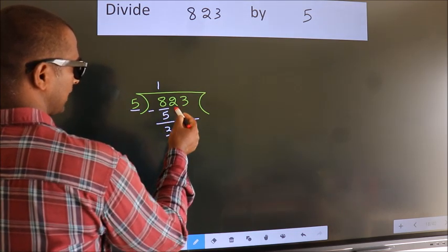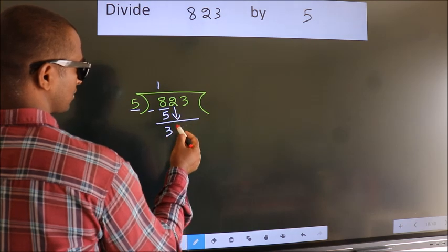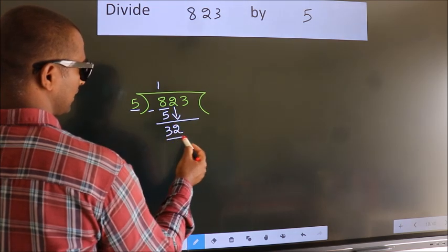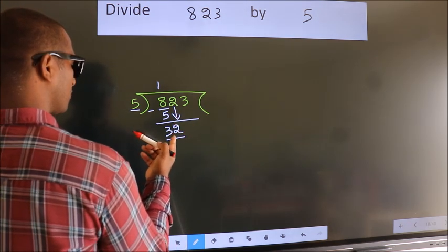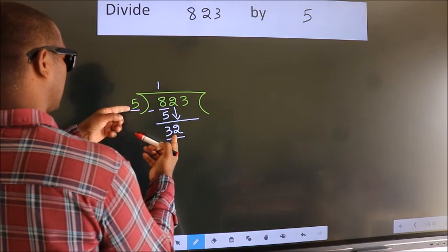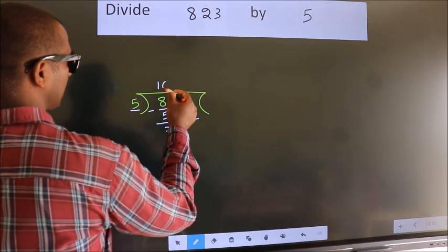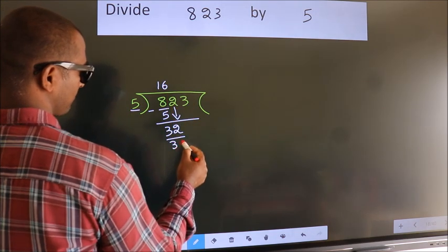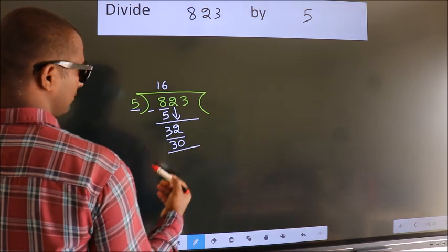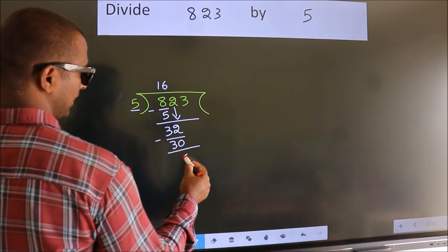After this, bring down the beside number. So 2 down. So 32. A number close to 32 in the 5 table is 5, 6, 30. Now we subtract. We get 2.